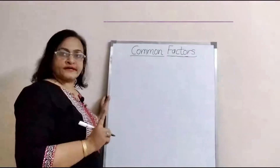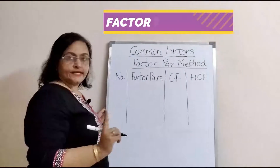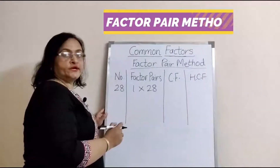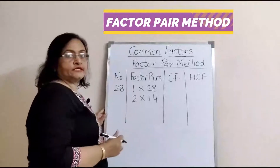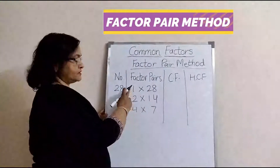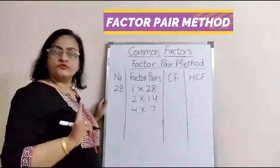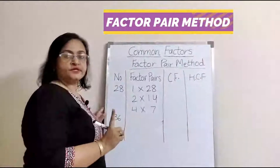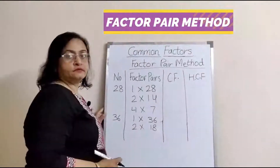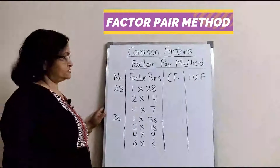Now let's use the factor pair method. For 28, the factor pairs are: 1 × 28, 2 × 14, and 4 × 7. So the factors of 28 are 1, 2, 4, 7, 14, and 28. For 36, the factor pairs are: 1 × 36, 2 × 18, 4 × 9, and 6 × 6. Now we find the common factors.